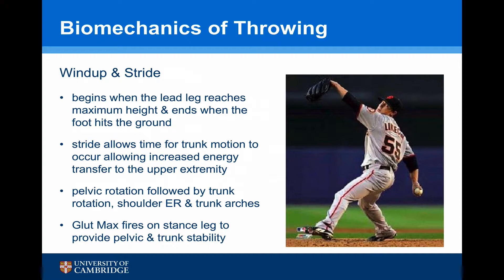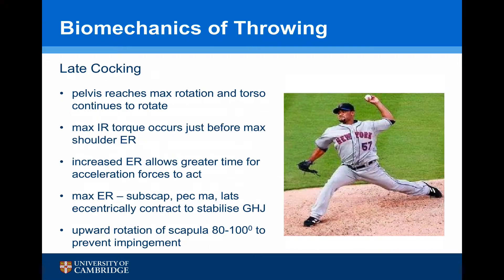Gluteus maximus fires on the stance leg to provide pelvic and trunk stability. In the late cocking phase, the pelvis reaches its maximal rotation, and the torso is still able to rotate further. Maximal internal rotation torque occurs just before the maximum external rotation of the shoulder. This increased external rotation allows greater time for acceleration forces to act. At maximum external rotation, the subscapularis, pec major, and latissimus dorsi are eccentrically contracting to stabilise the glenohumeral joint. Upward rotation of the scapula to about 80 to 100 degrees prevents impingement of the shoulder.